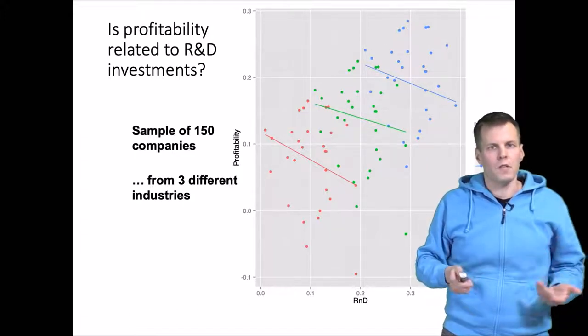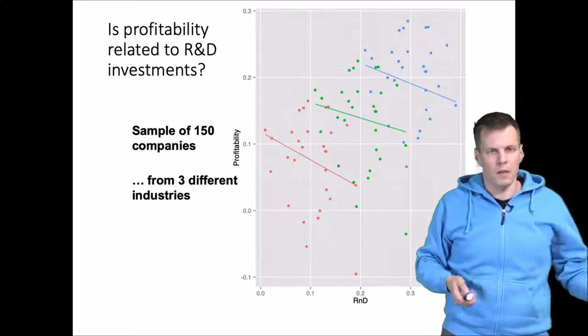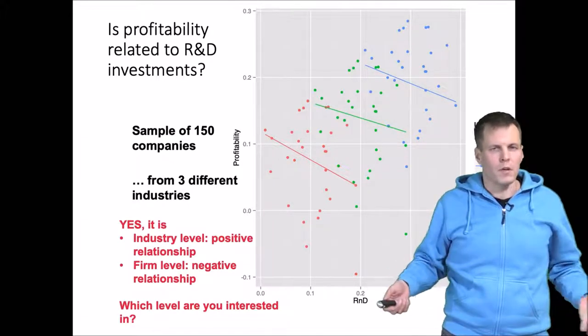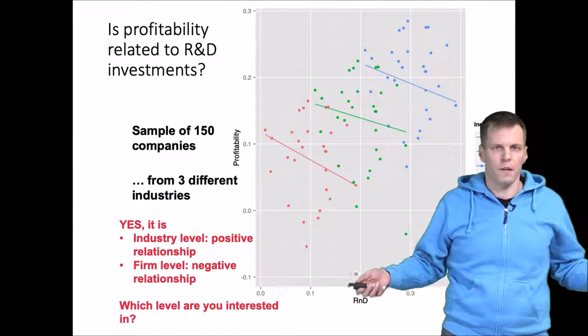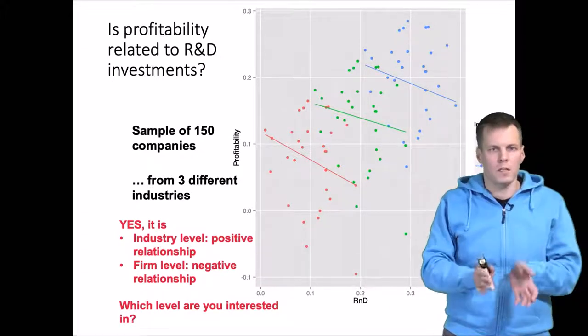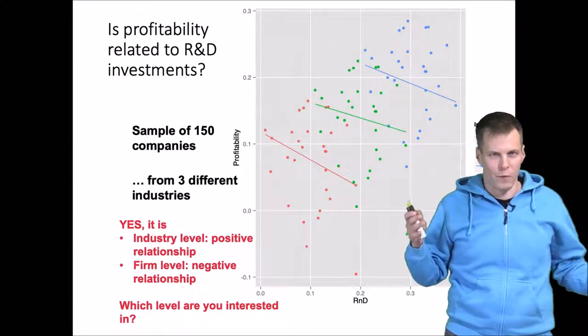Now the question is that if we want to know what is the direction and magnitude of the effect, we have to specify which level we are interested in. Because the answer is different depending on whether we want to study how firms perform within industries or whether we want to study how industries differ from one another.